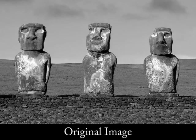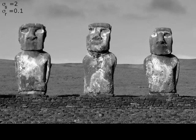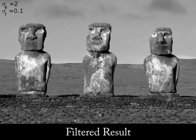The bilateral filter is probably the most popular edge-preserving filter in computer graphics. This filter does a good job at filtering small-scale details, but it is not well-suited for progressive coarsening of images, which requires filtering the larger scale details as well while preserving the salient edges.